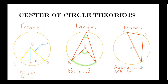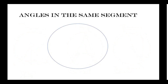Now let's look at the theorem that talks about angles that lie in the same circle segment. We're going to be looking at Theorem 4, which states that if you have angles that are in the same segment in a circle, then those angles are equal.